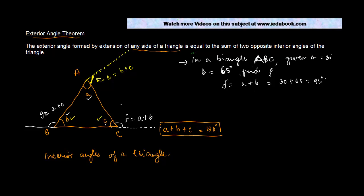Given that the exterior angle is going to be the sum of these two opposite interior angles, and we also know that none of the angles can be zero, F is always going to be greater than A, and F is always going to be greater than B. Because F equals the sum of A and B, and angles cannot be negative or zero, so F is always going to be greater than A or B.